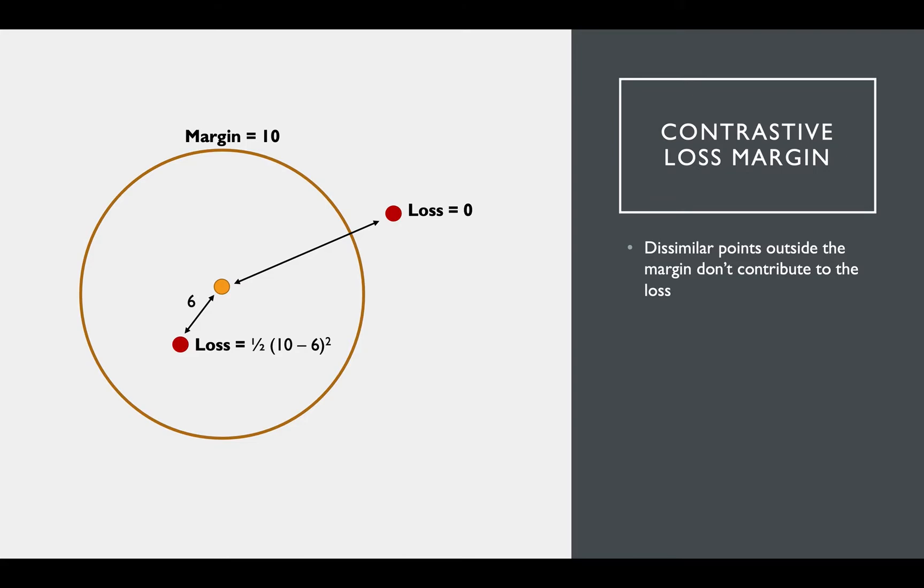As you might imagine, the choice of the margin here becomes very consequential in how the model trains. So this becomes an important hyperparameter when using contrastive loss with a margin.